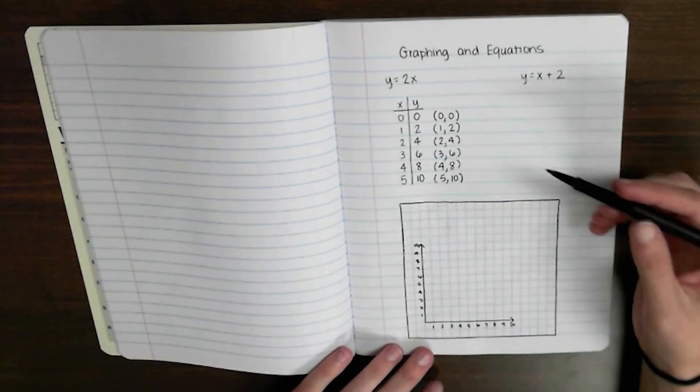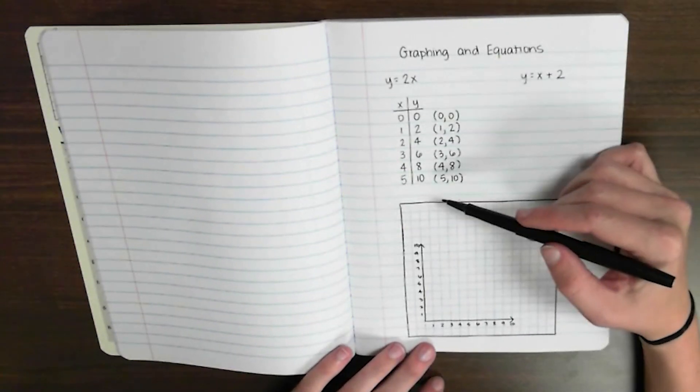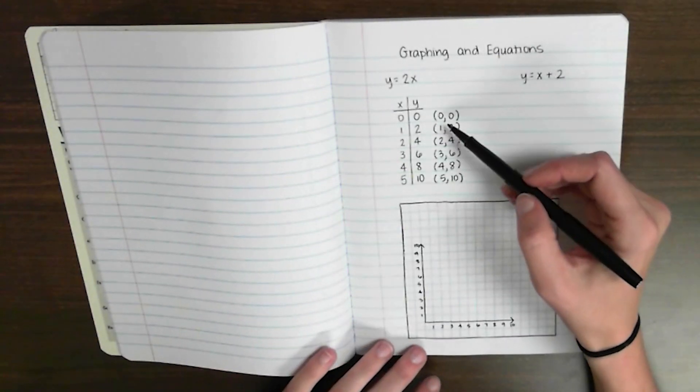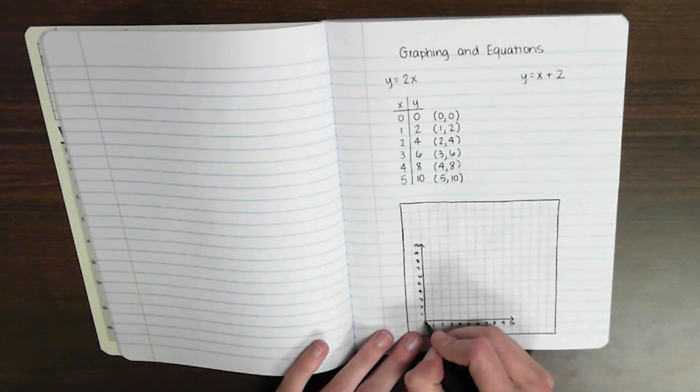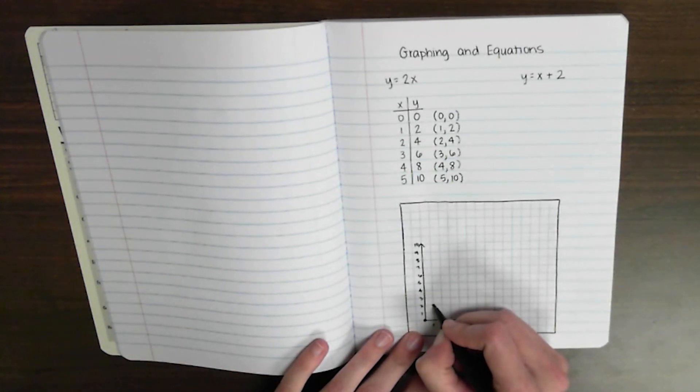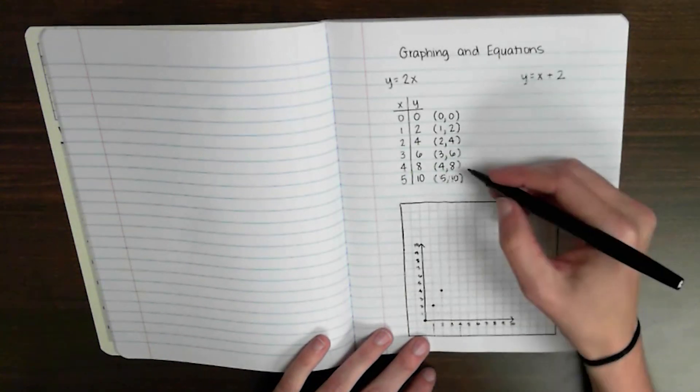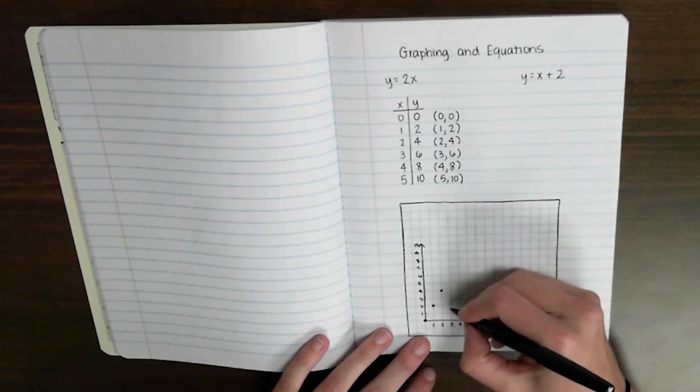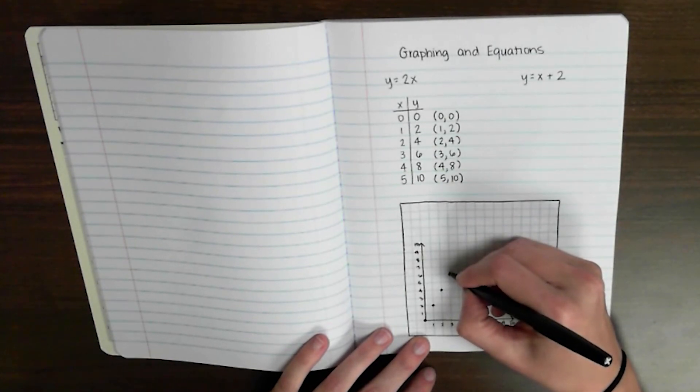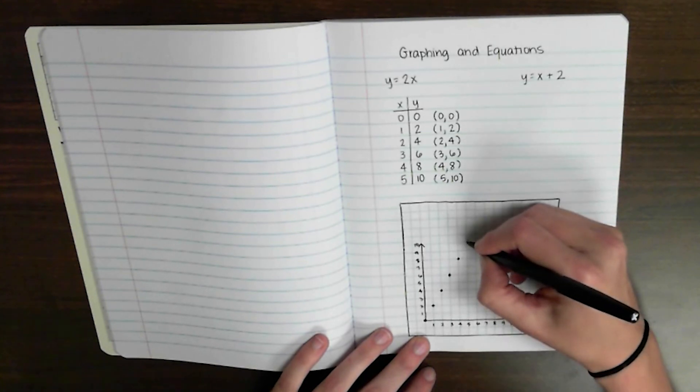Alright, so we want to plot these points on here. Remember, it always goes x first, then y, or over, and then up. So I'm going to start my pattern by plotting these points. 0, 0. 1, 2. Over 2, up 4. And I'm here over 3, up 6. Over 4, up 8. And over 5, up 10.